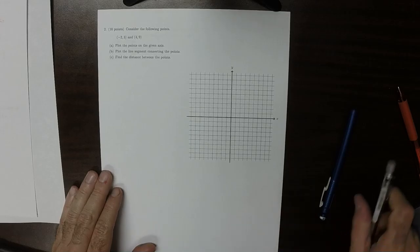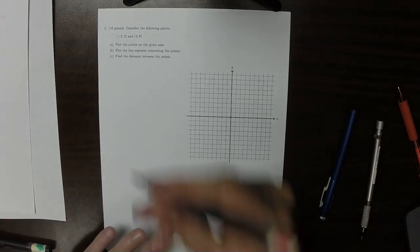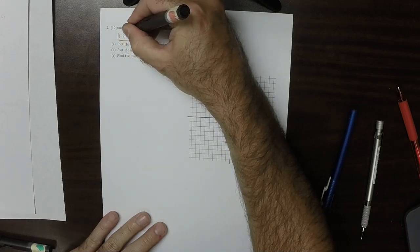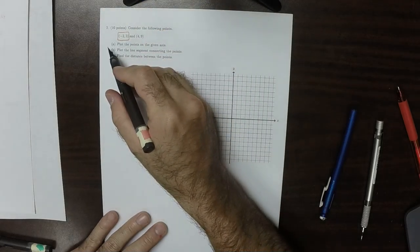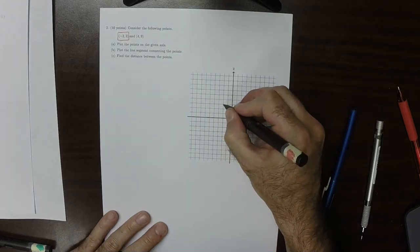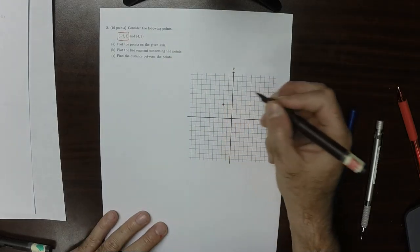So plot the points on the given axis. OK? So I'll call this the red point. So negative 2 and then 3, so negative 2, so 1, 2, and then 1, 2, 3. So this is the red point.